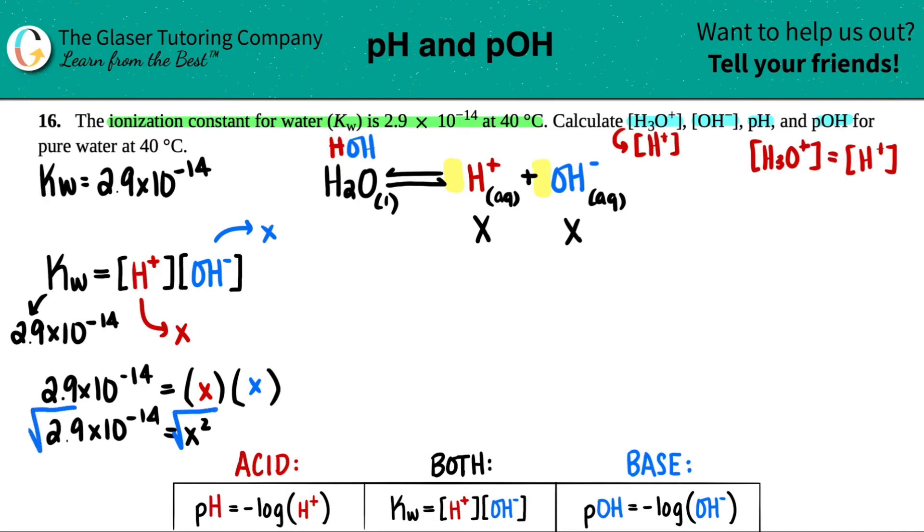So you square root both sides - that gets rid of the square and now we just have x equals. Let me write this down in the corner: the square root of 2.9 × 10^-14. We'll do two sig figs, so that's 1.7 × 10^-7 molarity.